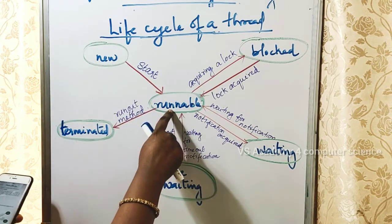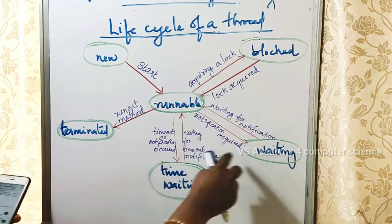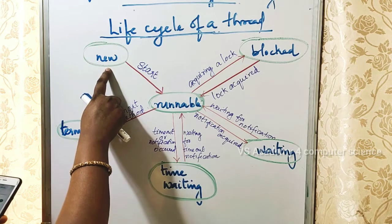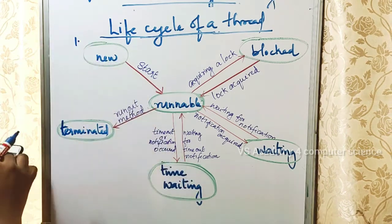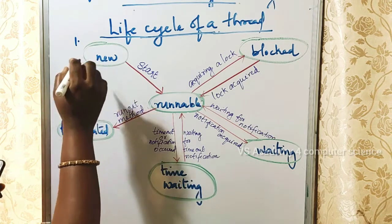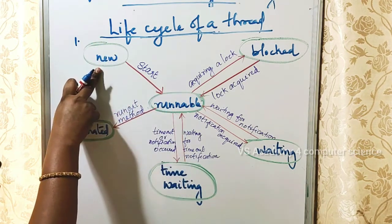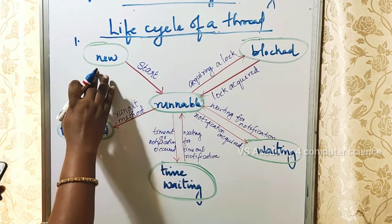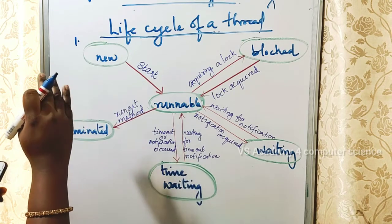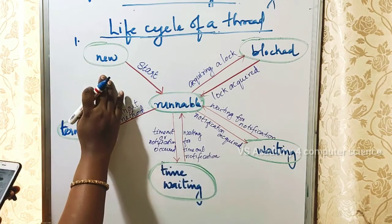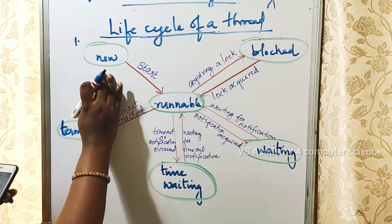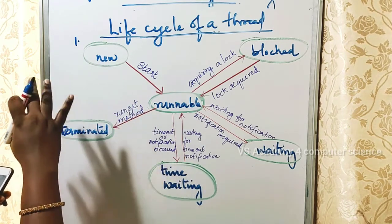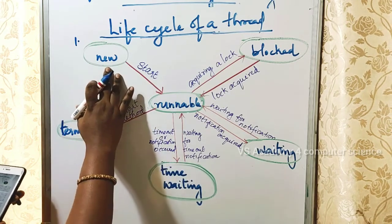The first state is 'new.' When a thread is created, it is in the new state. In this state, the code is yet to run — the thread has been created but has not started to run yet.